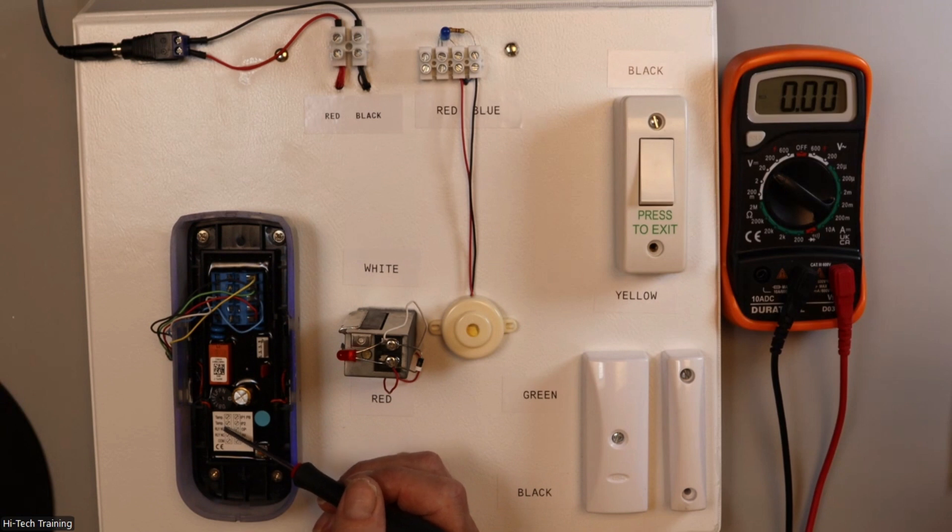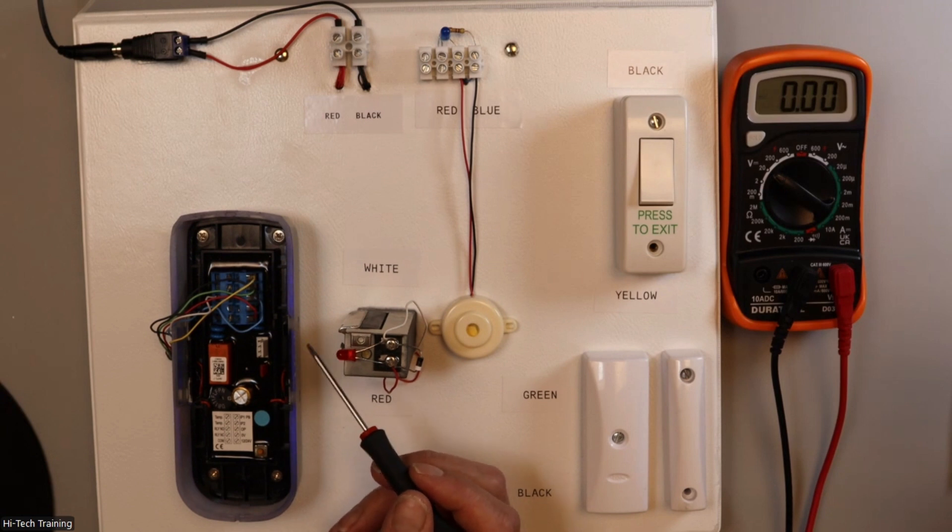You have two tamper connections here. You have a relay normally open, which you would use for locks like this one, electric strikes. Normally closed that you might use for mag locks. Common, return here, and the inputs.